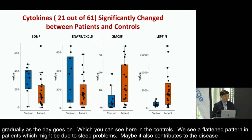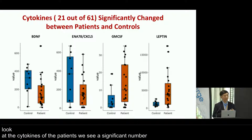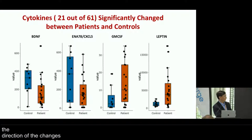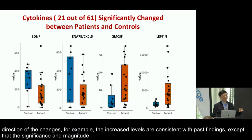When we look at the cytokines of the patients, we see a significant number of cytokines showing differences between patients and controls. We compared each difference with what has been published in the past, and for all of them the direction of changes — for example, increased leptin levels, increased GM-CSF levels — are consistent with past findings, except that the significance and magnitude of changes are bigger here, presumably because these are severely ill patients.